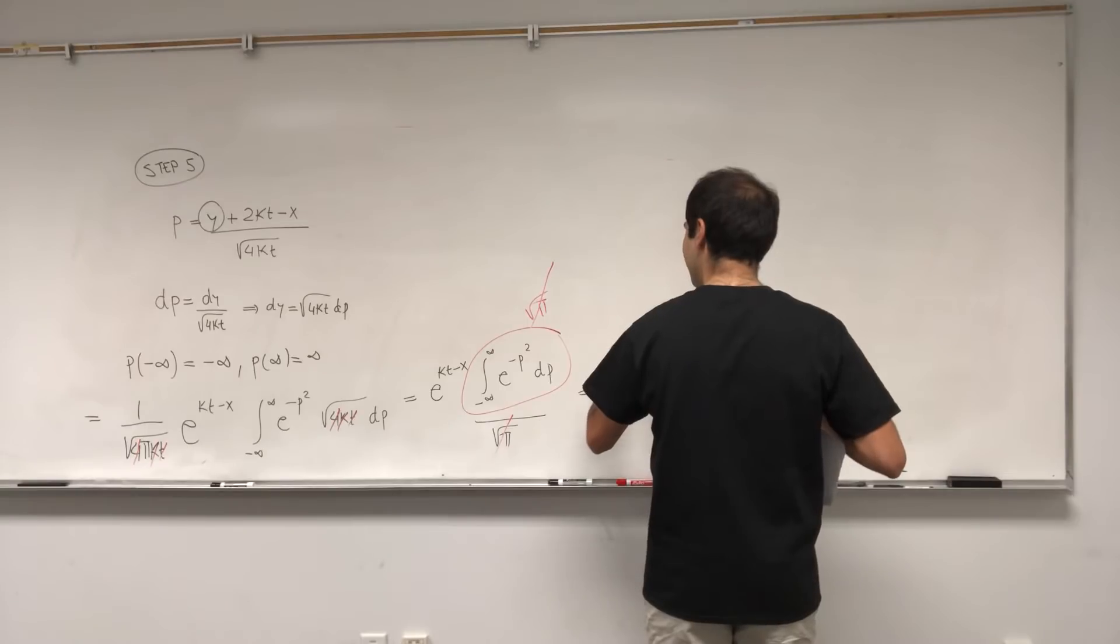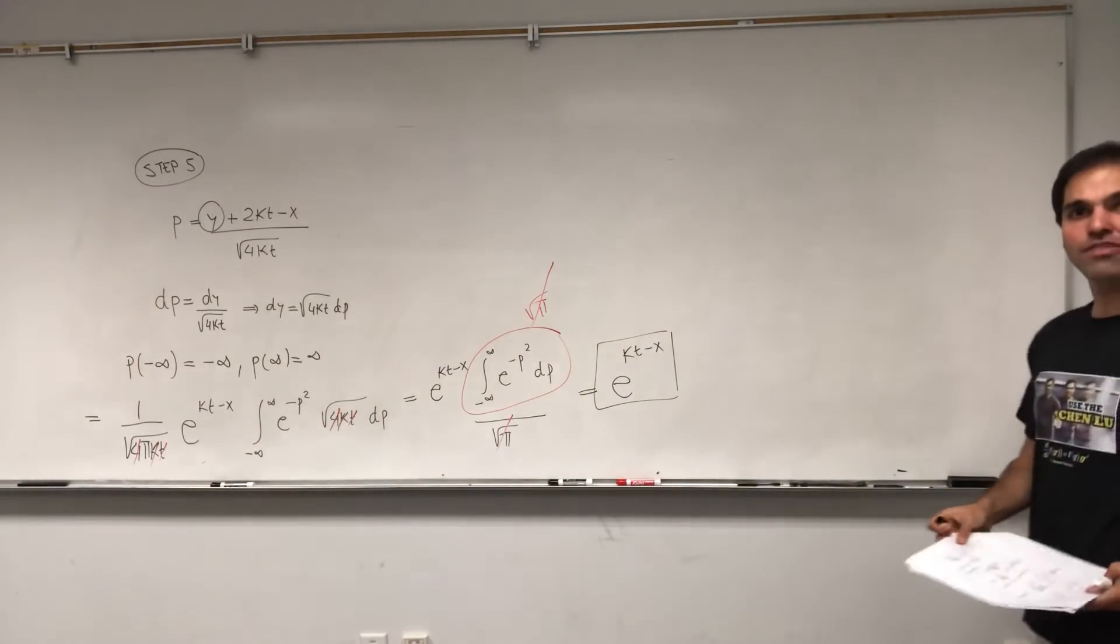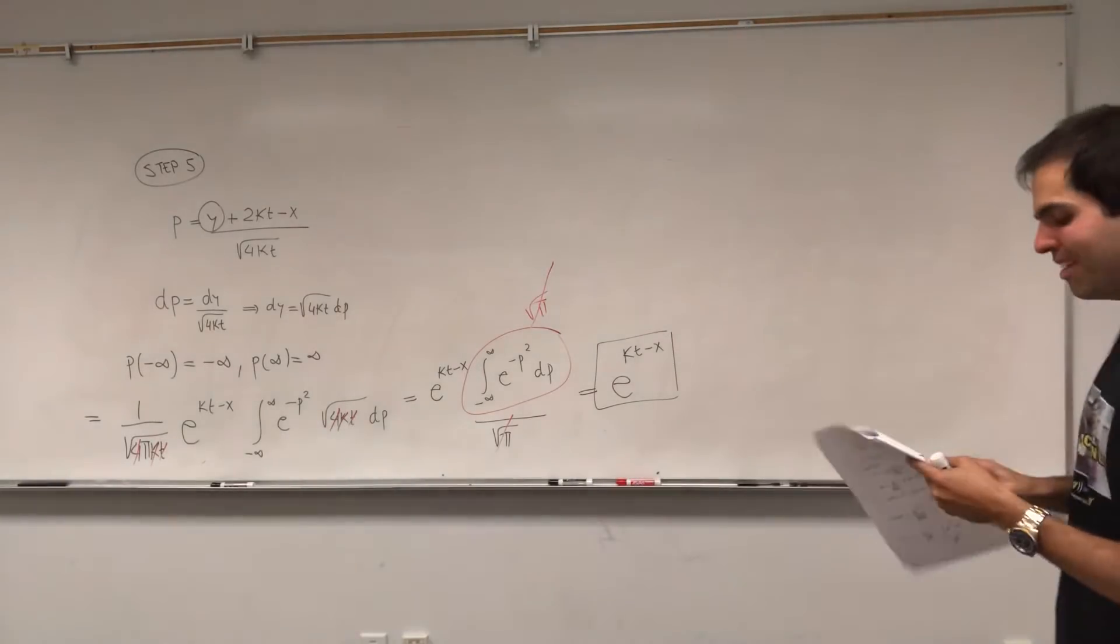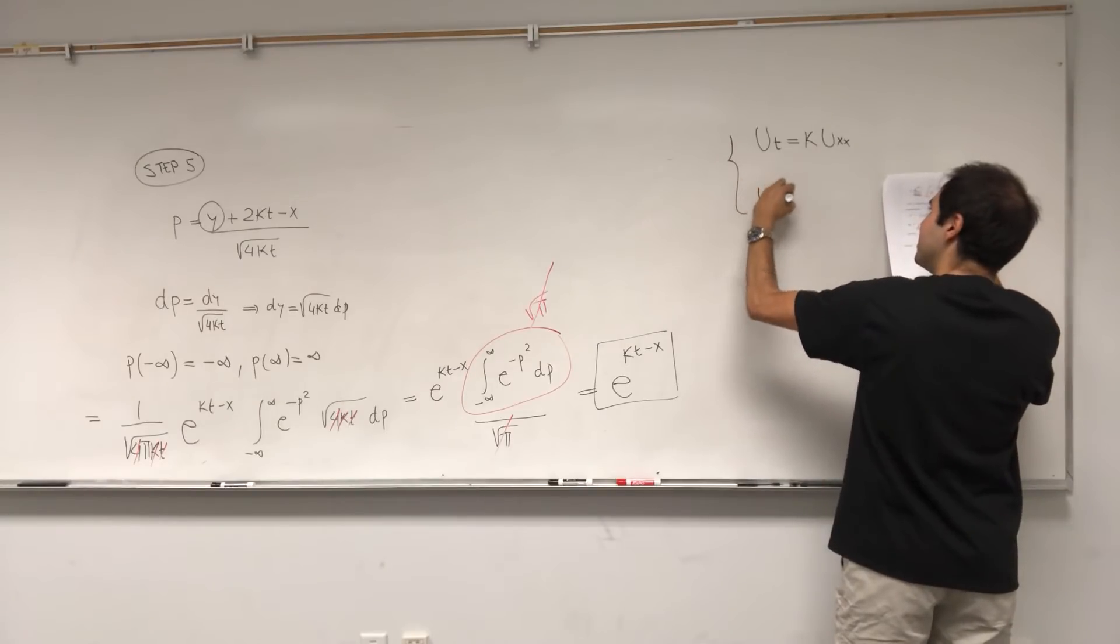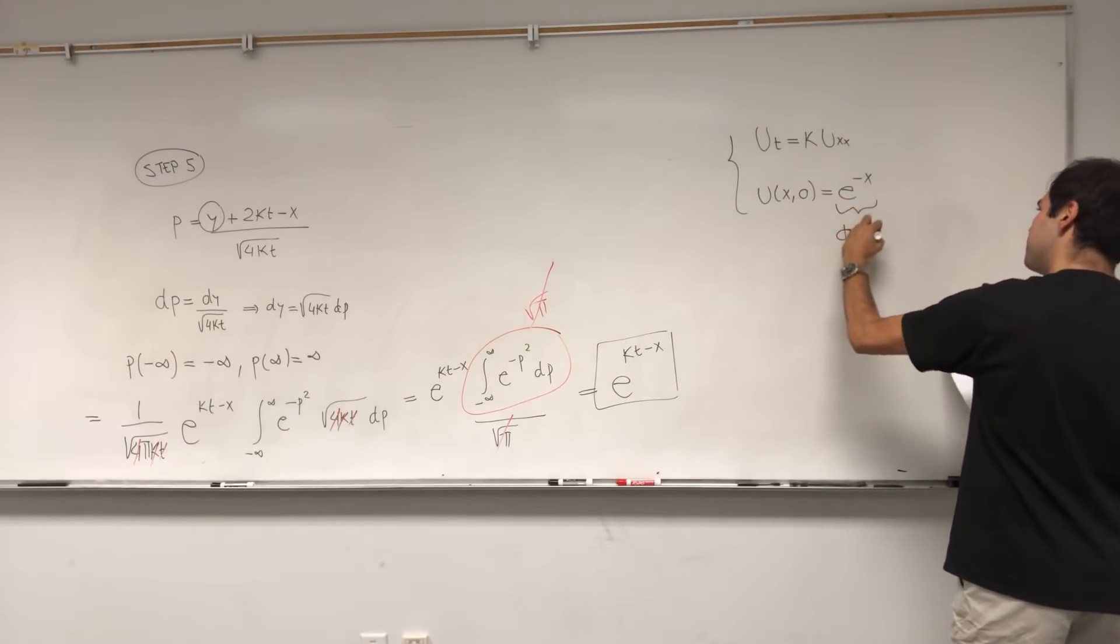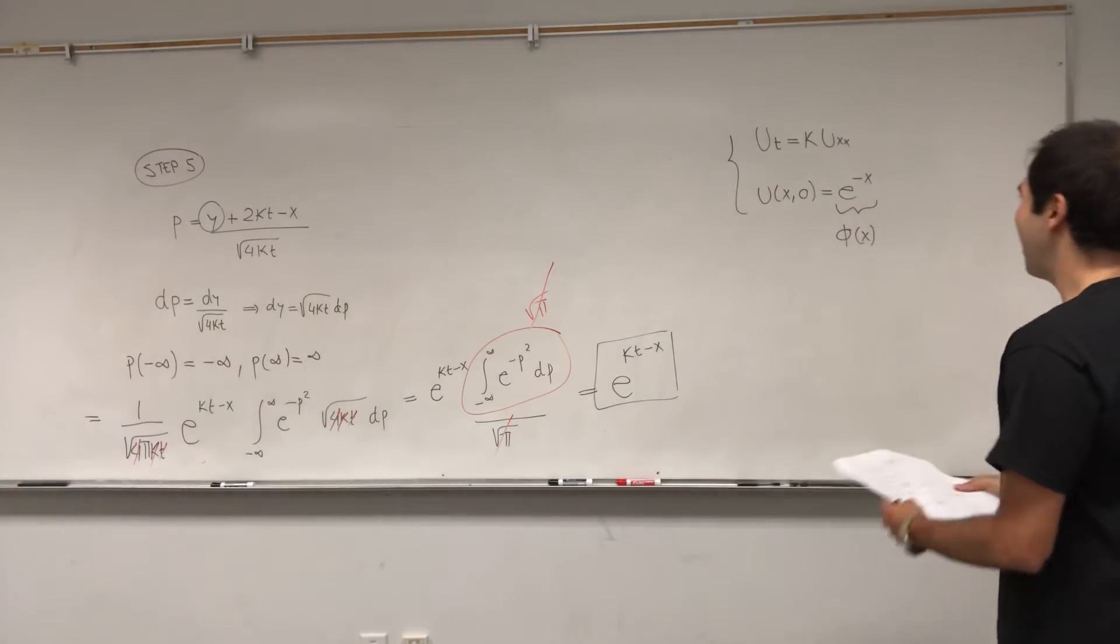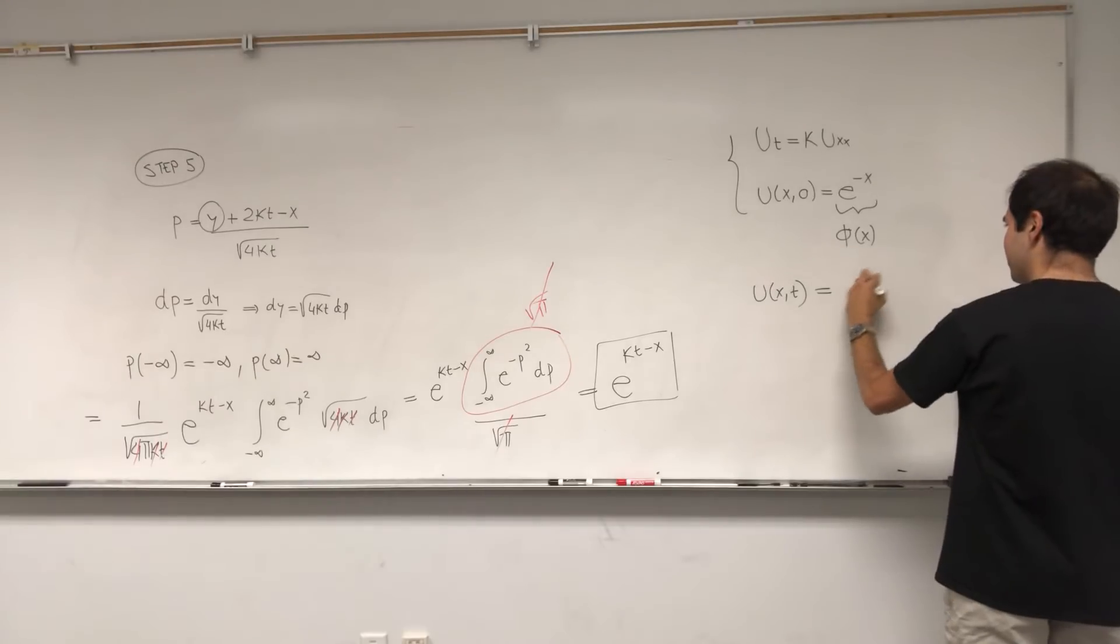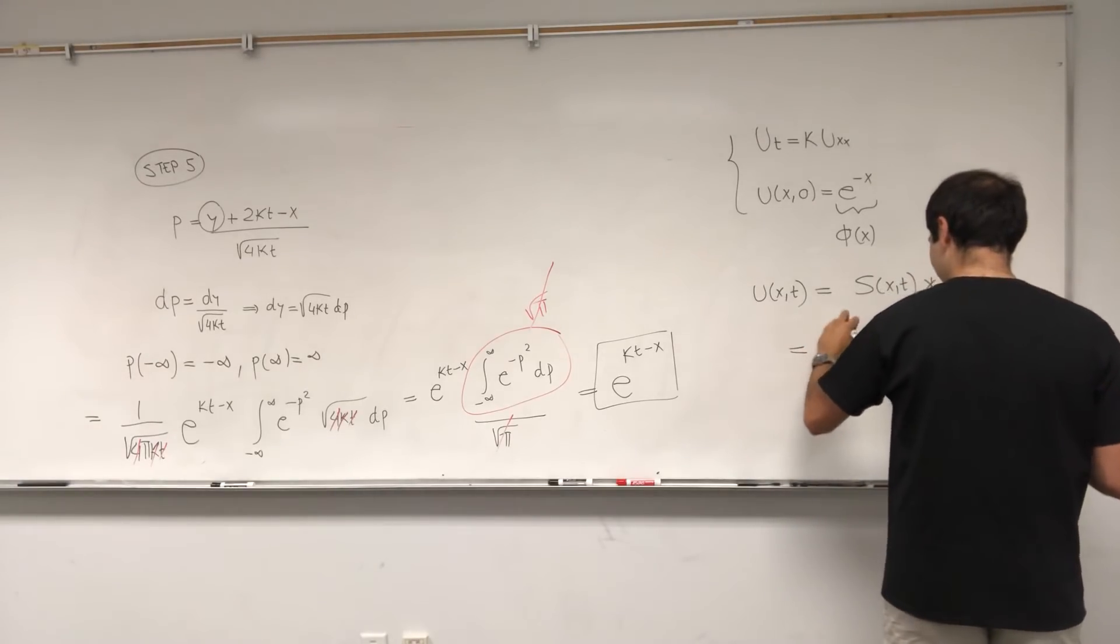So you see how beautiful, we have this weird answer with square root of t's, with y's, and it turns out at the end it gives you e to the kt minus x. And lastly, you may wonder why is that useful. Well, here's a really cool application. Suppose you want to solve the heat equation ut equals k uxx with initial condition u(x,0) equals e to the minus x, let's call this phi of x. Well, unfortunately this usually has infinitely many solutions, but there is one solution that's kind of nice.